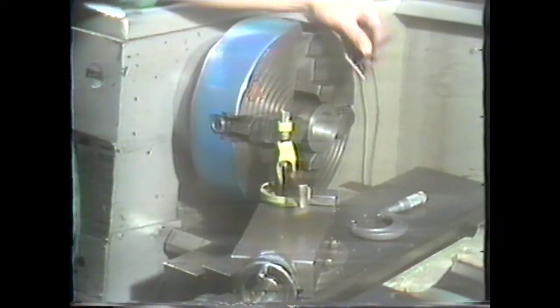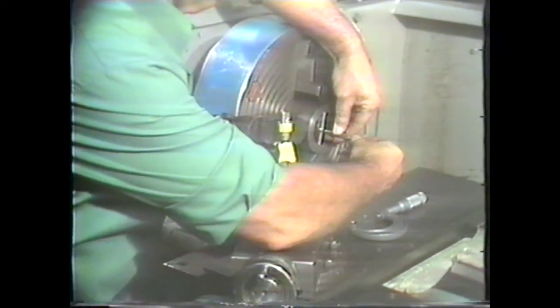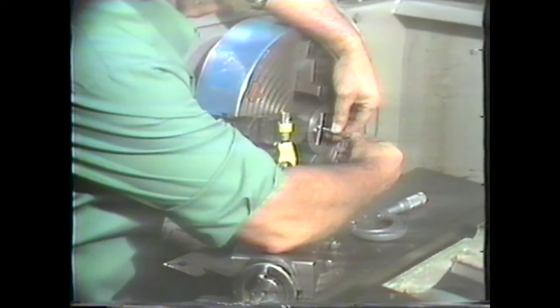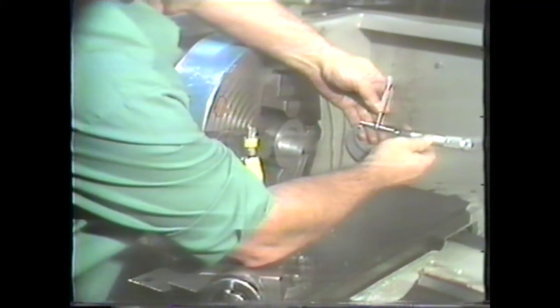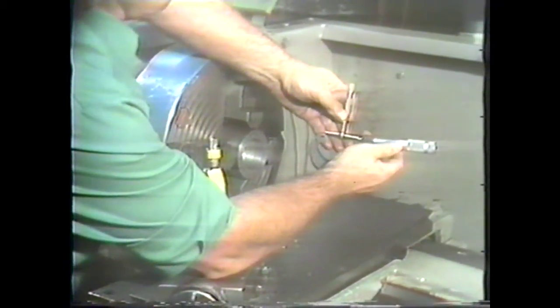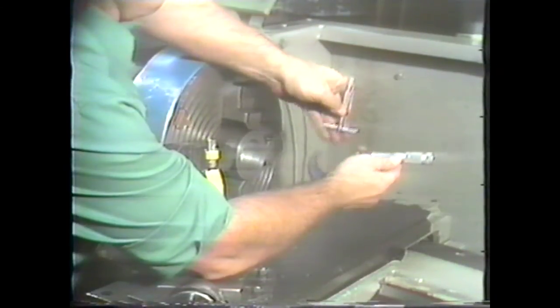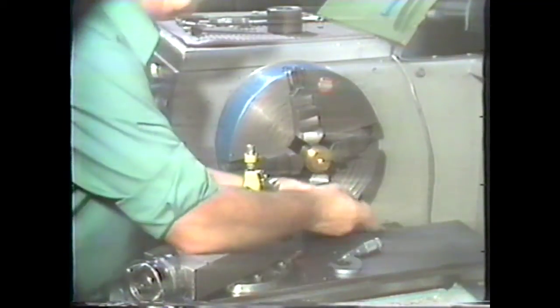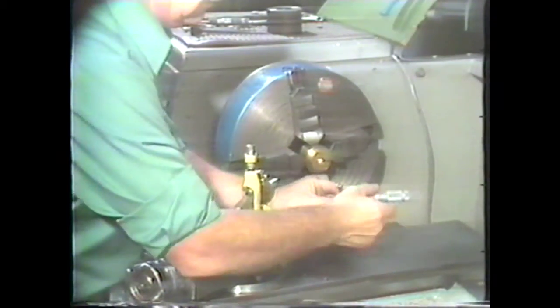The telescoping gauge, when used with an outside micrometer, allows you to get an accurate measure of an inside dimension. Telescoping gauges are not generally used for holes of one half inch diameter or less. For such small readings, you would use a hole gauge. Here, a hole gauge is used to measure the diameter of a hole of less than one half inch in diameter.